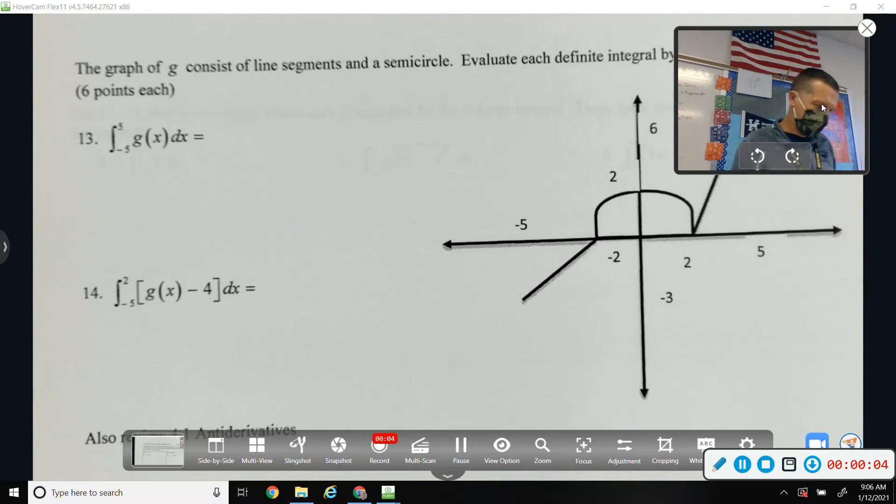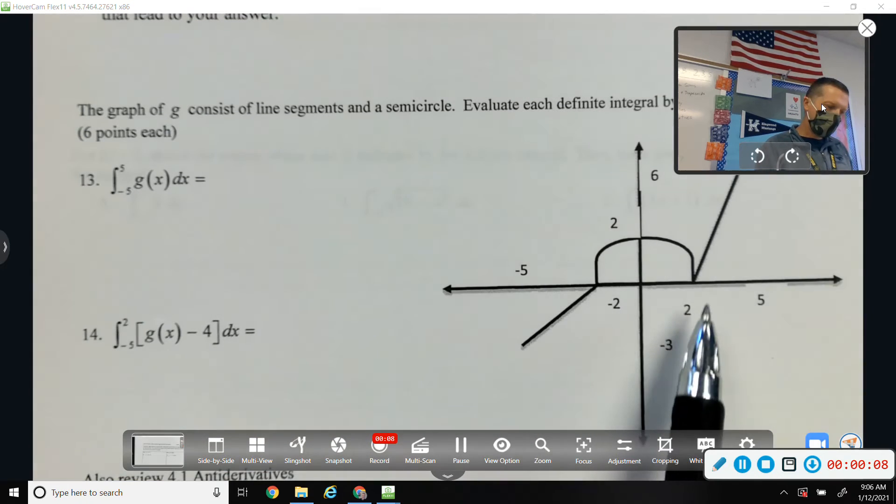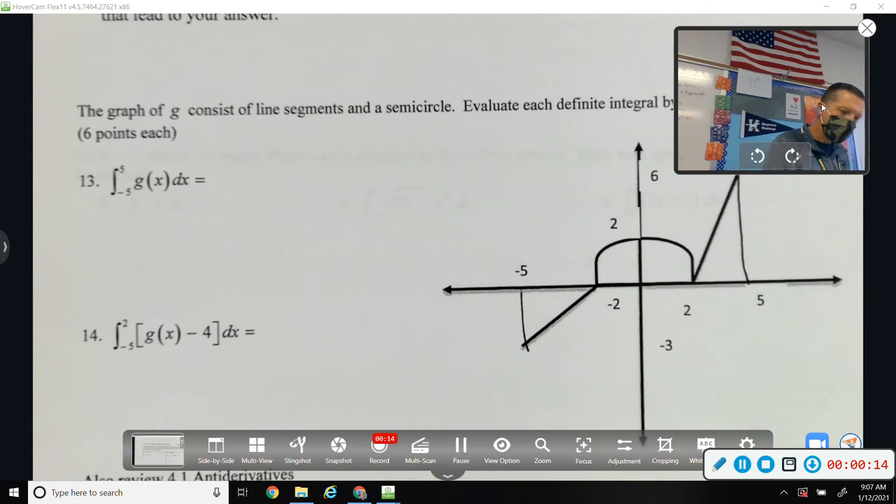So this is the review, looking at number 13, the integral from negative 5 to 5 of the whole thing. The whole thing, area under the curve, and we just want all that area.